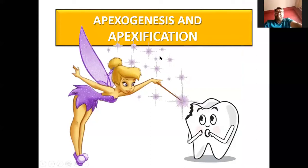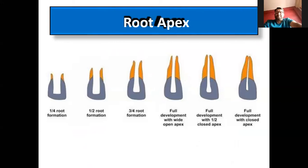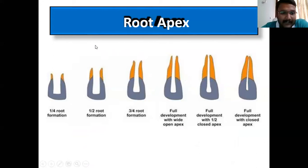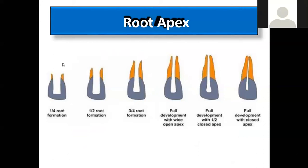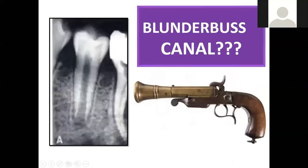Good afternoon everybody, happy Vishu. Today's topic is apexogenesis and apexification. We are giving a brief idea about apexification. These are all the different stages of root development. After stage six is the root completion, and these are the different stages of how the root occurs, with the final stage being a closed apex.